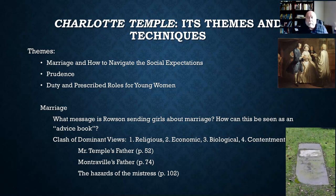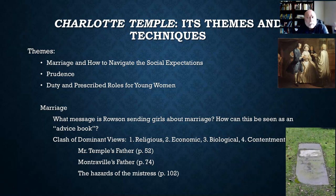The second theme, really related to the first, is prudence. You see it throughout the novel — she's always talking about prudence and imprudence. It's really important to Rowson that everyone exhibit prudence, not just young women.